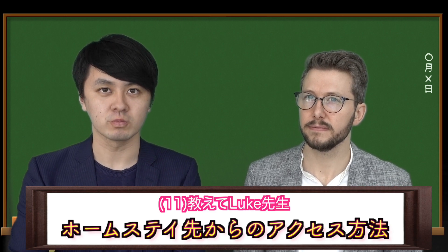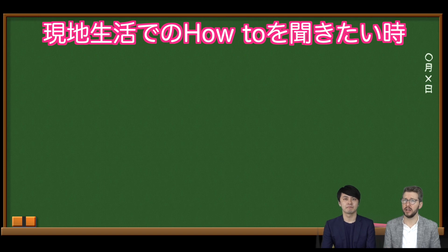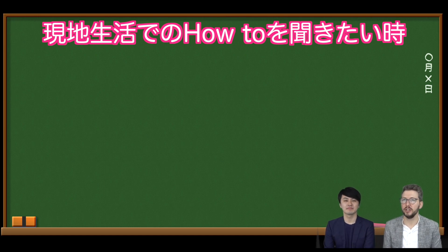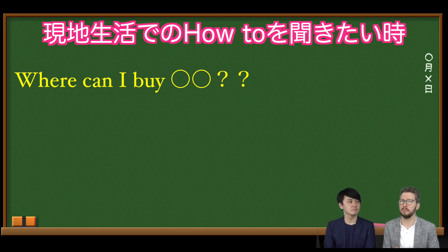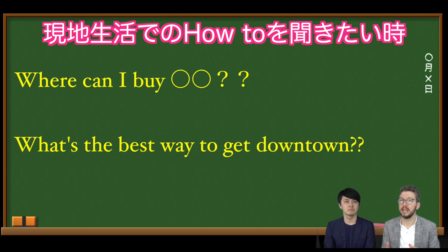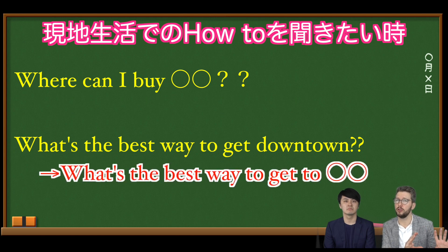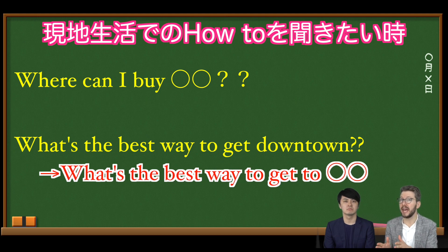You'll also want to ask your host family about the local area and how to get around. One general question you can use is: 'Where can I buy [something]?' You might also want to ask specific questions about how to get somewhere. For example: 'What's the best way to get downtown?' or 'What's the best way to get to the station?' Your host family will likely know the area best, so they're a great source of local information.